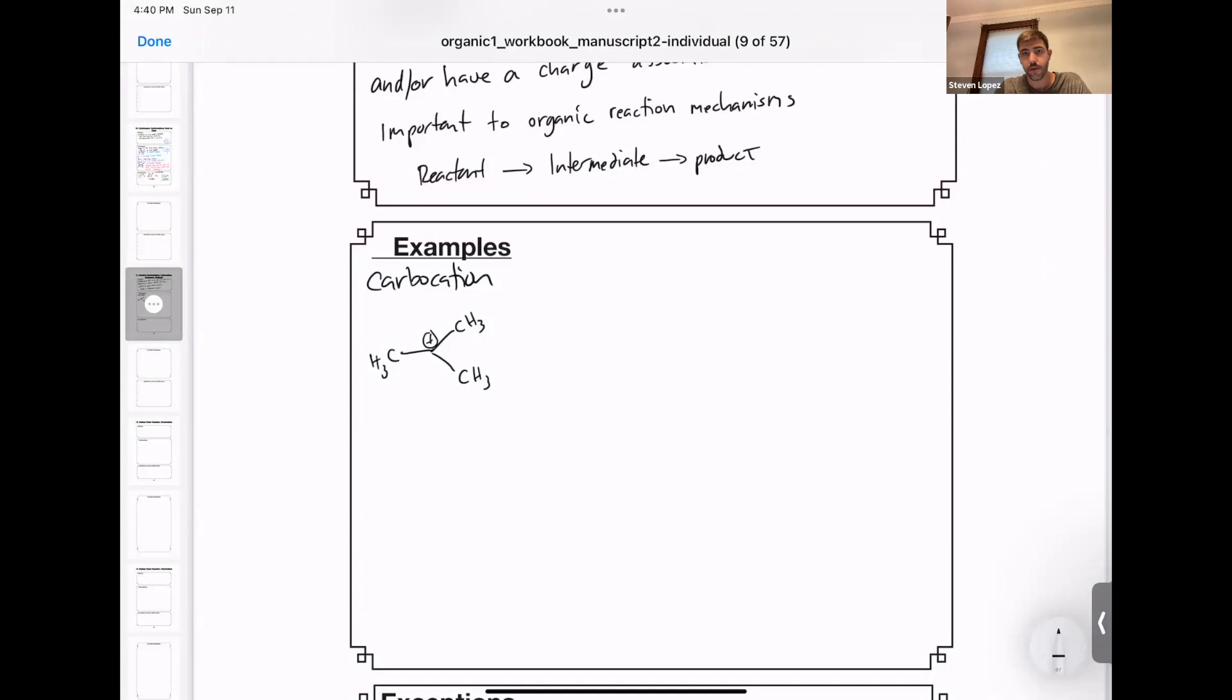And if you calculate the formal charge, you get a plus one for that carbon. This is also an example of a tertiary carbocation because it's attached to three groups that are not hydrogens. An example of a secondary carbocation is the following. So here it's attached to two groups and a hydrogen.